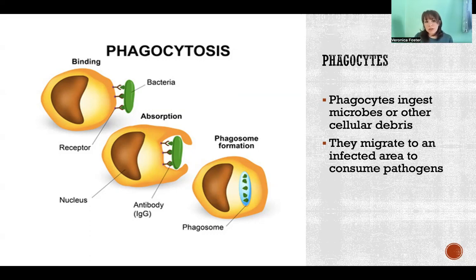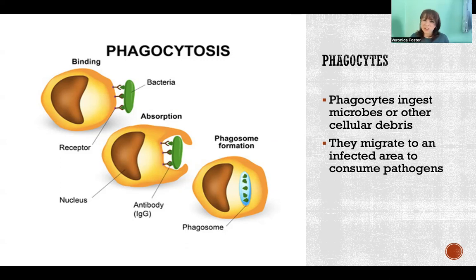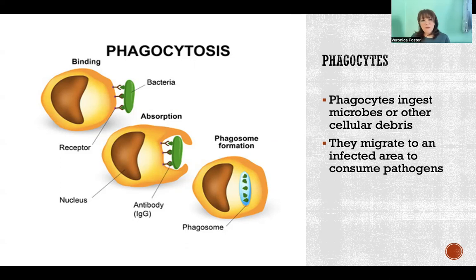Phagocytes can also clean up things like splinters, as long as the splinter is made of organic material. So if you got a wood splinter and can't quite get it out, that's okay because the phagocytes will actually go and dissolve that wood away — it won't be there forever. But if it's something like a metal splinter that's inorganic, that's going to stick around, so you have to work harder on getting that out because your phagocytes won't be able to dissolve it.